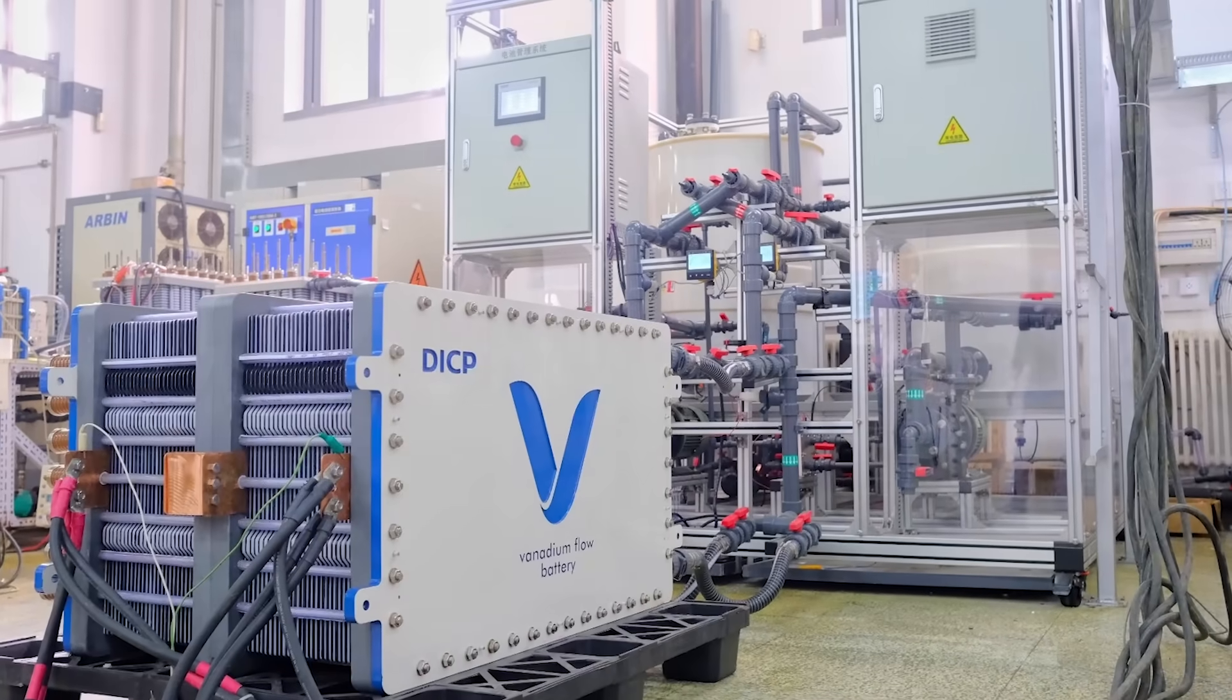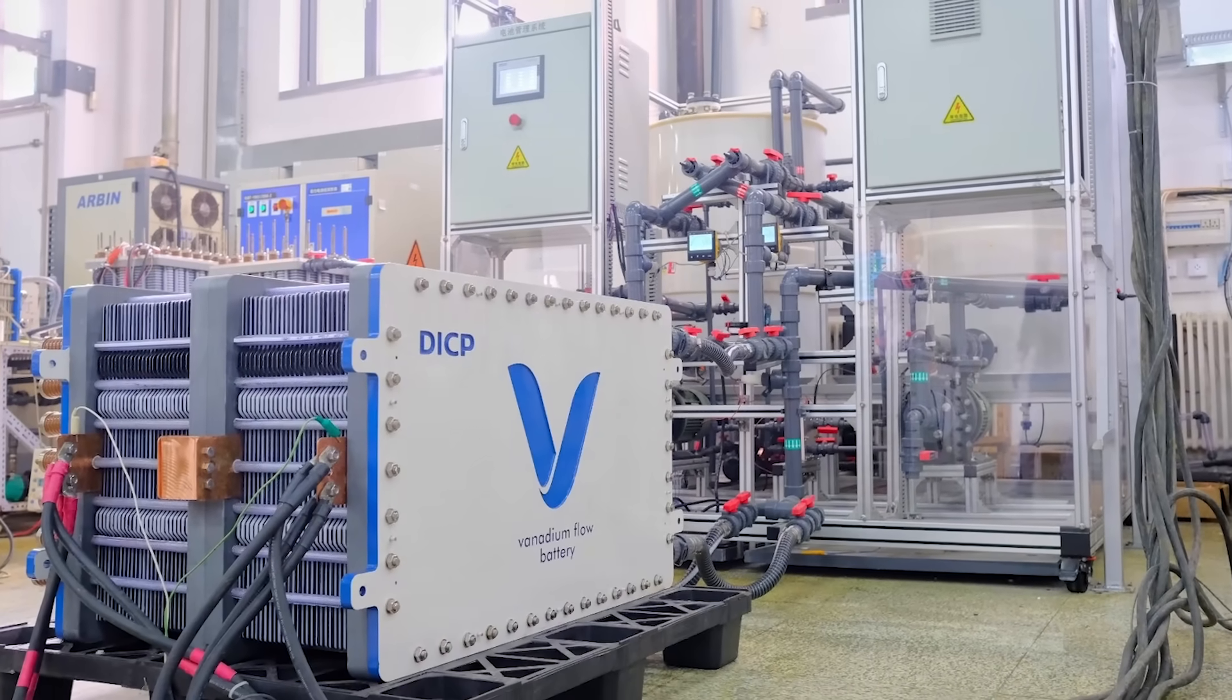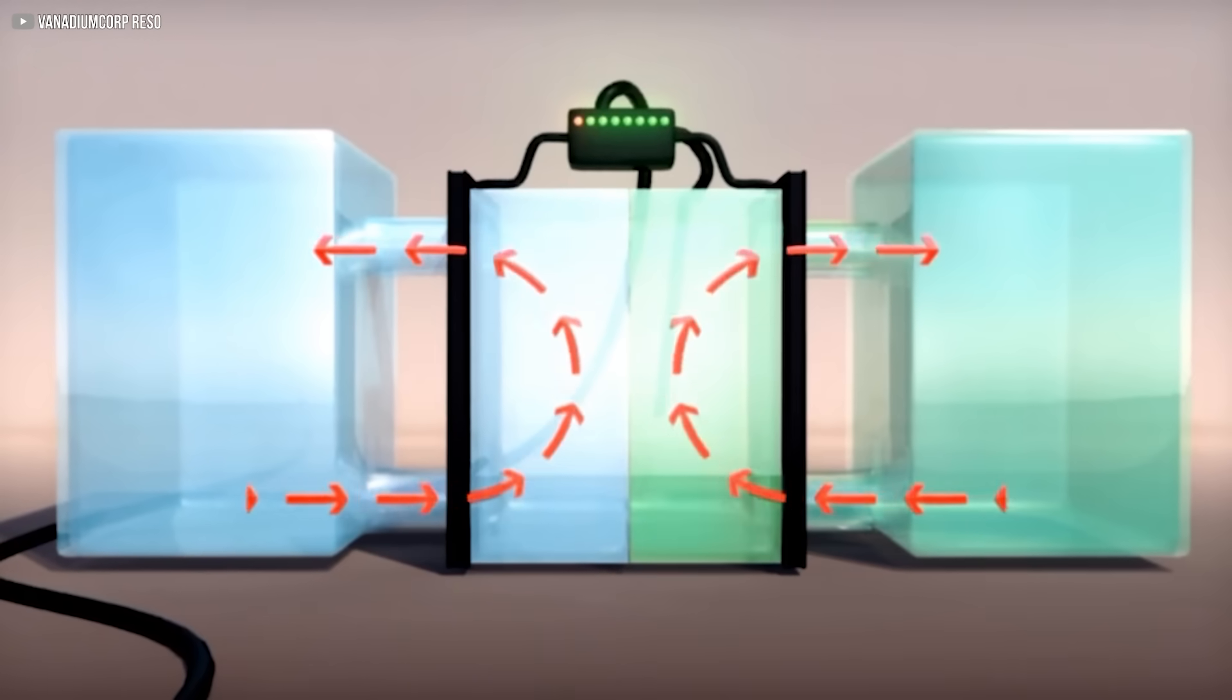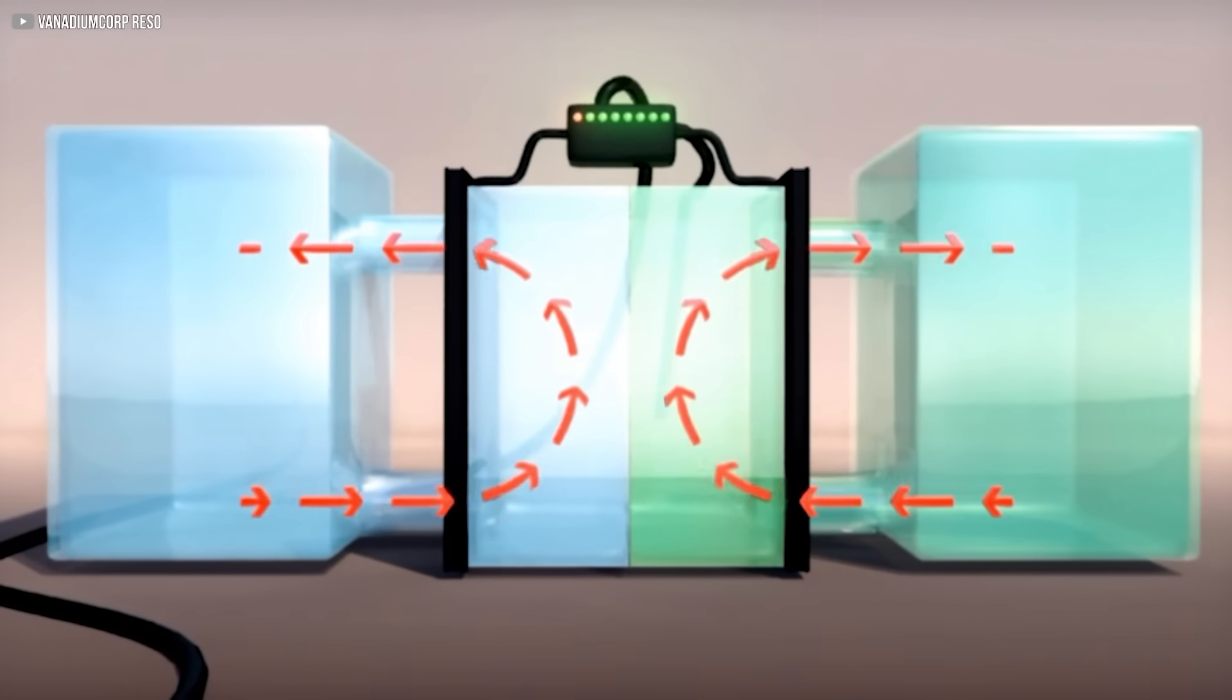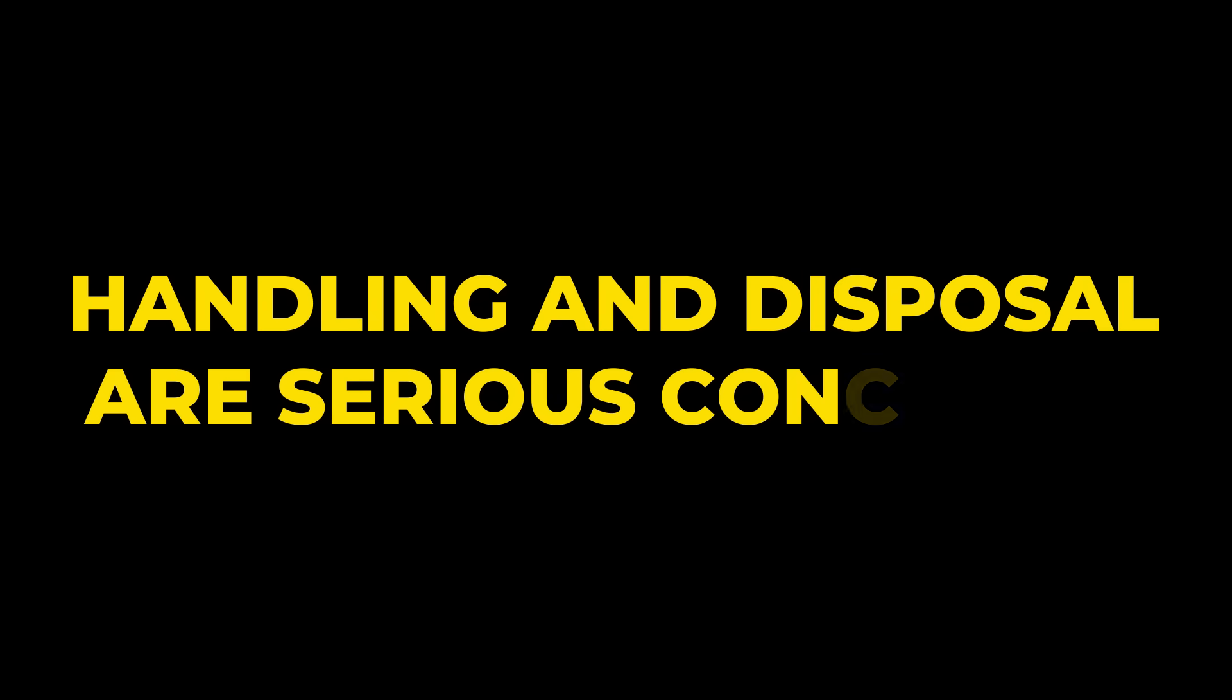Vanadium flow batteries offer similar safety, but come with their risks. Vanadium oxide is highly toxic, and it's dissolved in corrosive sulfuric acid. Handling and disposal are serious concerns.